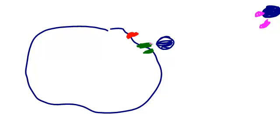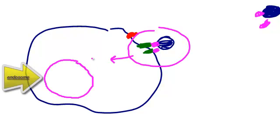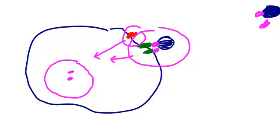When the transferrin with the iron comes to the transferrin receptor, it will go down by a process called endocytosis. The HFE receptor also follows this process. As a result, inside you will have iron with transferrin on it, along with the transferrin receptors.